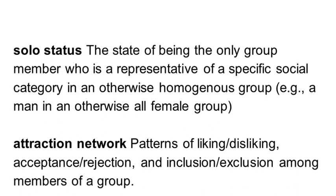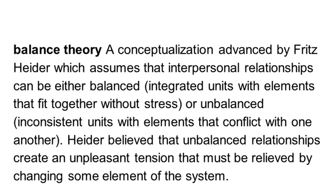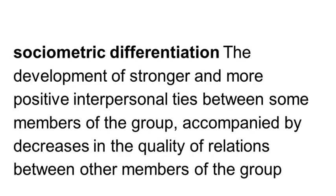A group's attraction network, or in Moreno's terms, its sociometric structure, develops through sociometric differentiation — a process that orders group members from least liked to most liked. Attraction relations tend to be reciprocal and transitive, and clusters or coalitions often exist within the group that are higher in homophily than the group as a whole. As Heider's balance theory suggests, sociometric structures tend to reach a state of equilibrium in which likes and dislikes are balanced. Sociometric differentiation generally favors individuals with socially attractive qualities, but social standing also depends on person-group fit.